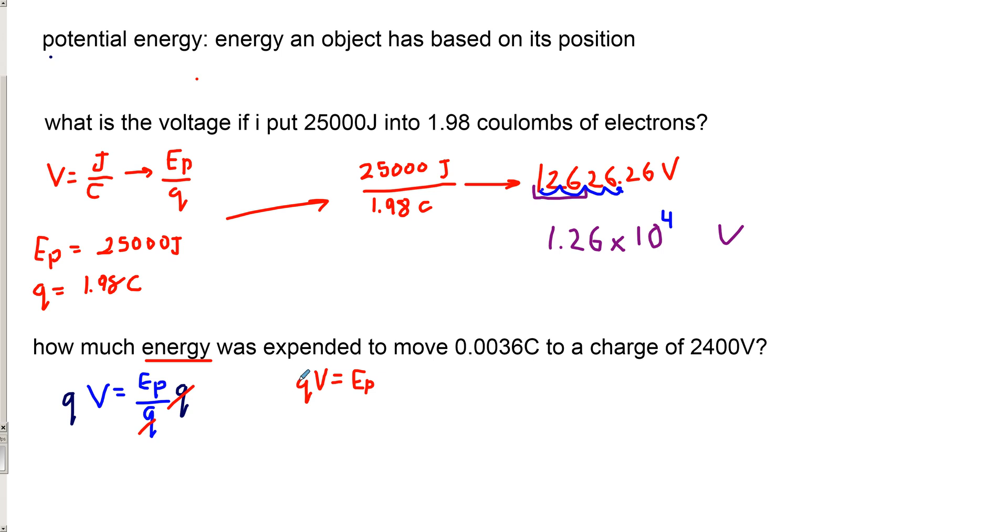So q times V equals Ep. So this is obviously my voltage because it has a V. This is my q because it's a coulomb. So I'm going to say 0.0036 coulombs multiplied by 2,400 volts. And I'm going to write volts as J over C, so J over C. Why am I allowed to do that? Because 1 volt is 1 joule per coulomb. And it makes it easier for us because that means I can cross out those and I know that my answer is going to be in joules, which is the point because how do we measure energy? We measure it in joules.